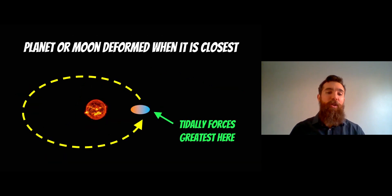If we've got an elliptical orbit, let's use the example of a planet. As it orbits around, it gets closer to the star and then further away because that's how elliptical orbits work. The gravitational forces and tides are greatest when it's closest to the star, so it becomes more deformed when it's closest.